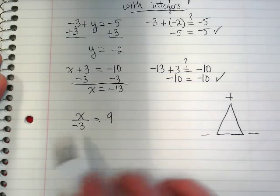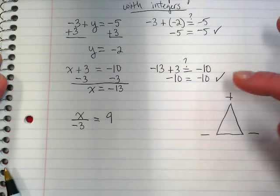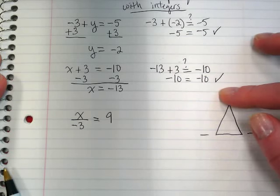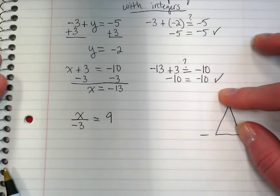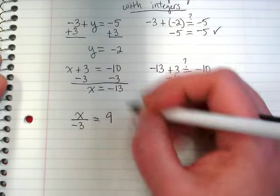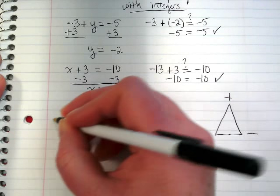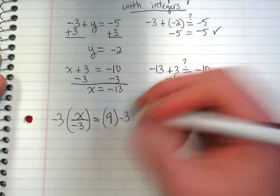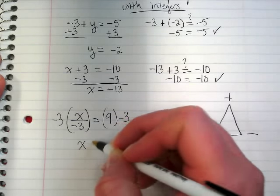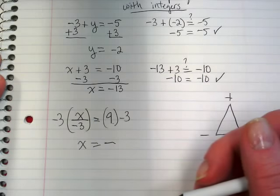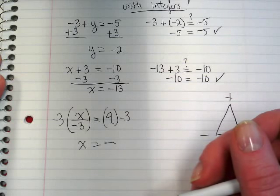9 times negative 3. So let's look at our triangle. The 9 is positive. The 3 is negative. So our answer is going to be negative here. So if I multiply both sides by negative 3, my x is going to become negative... What's 9 times 3? 9 times 3, 27.